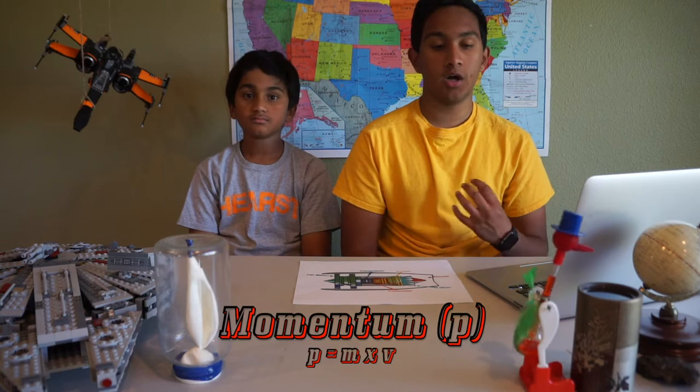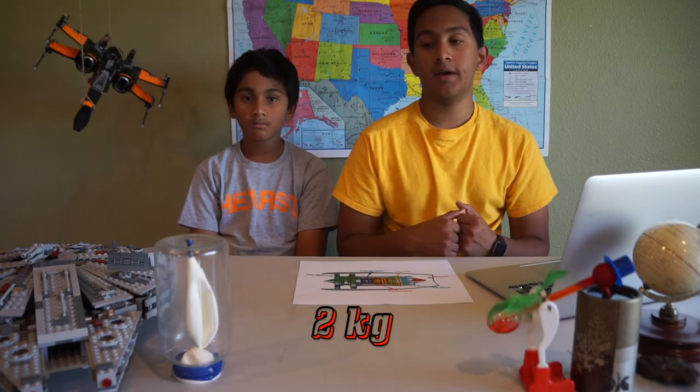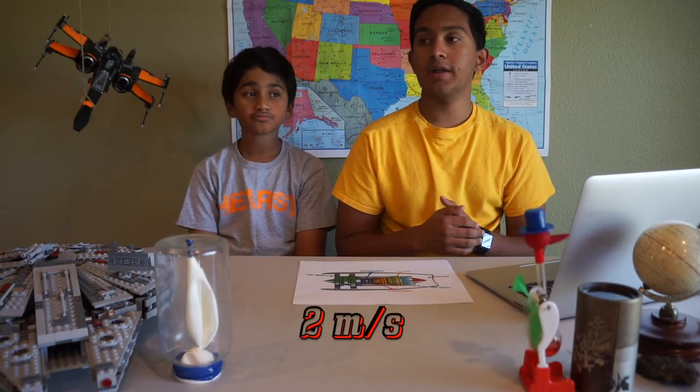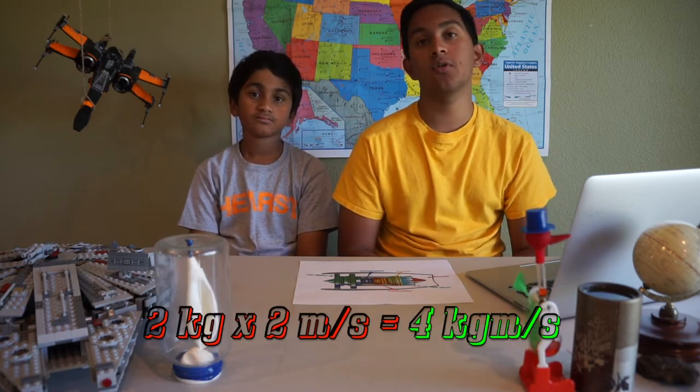The last thing we need to learn is momentum. The momentum of an object is calculated by the object's mass times its velocity. For example, if I were to have a bowling ball that weighs two kilograms rolling at two meters per second, it would have a momentum of four kilogram meters per second — two times two is four.